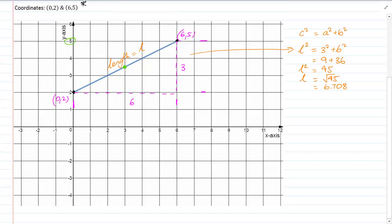As you can see here, on my y-axis, my line goes from 2 to 5. The average is right in the middle of 2 and 5, which I hope you can see is 3.5. And on my x-axis, it goes between 0 and 6.